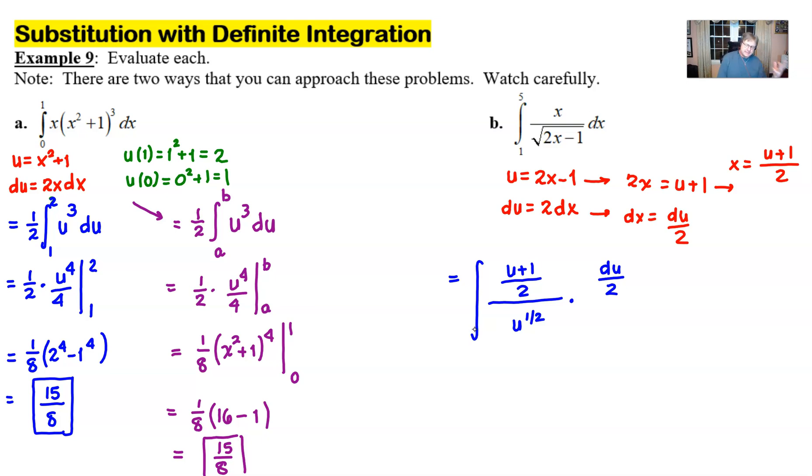Now at this point you can make a decision do we want to use our u values a u equation to change our boundaries and I tell you what I'm going to go ahead and do that with this problem. So off to the side here I'll say u of 5 is equivalent to 2 times 5 minus 1 which is 9 and u of 1 is equivalent to 2 times 1 minus 1. 2 minus 1 is 1. So now that I've got these boundaries what that means is that I can stick with u and I never have to go back to an x. But it looks like we've got a little bit of work here to do to get this thing ready to integrate.